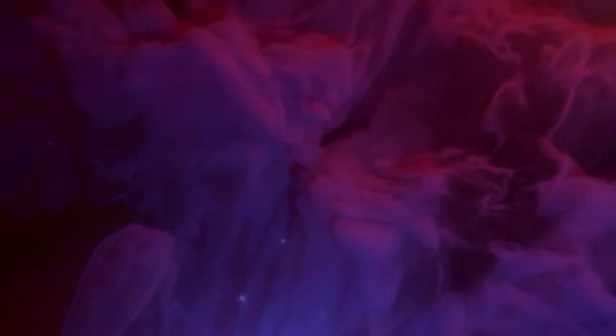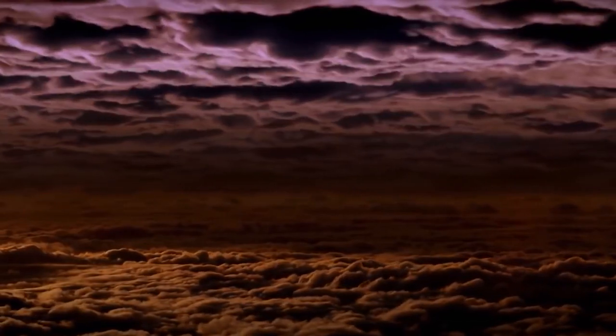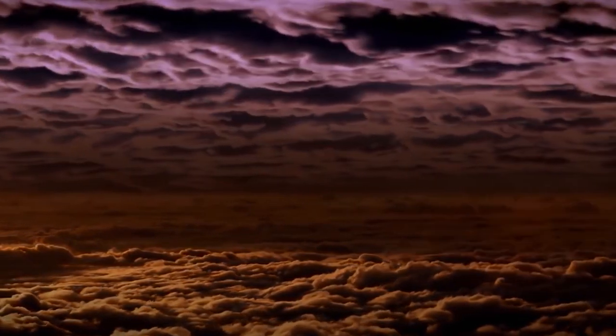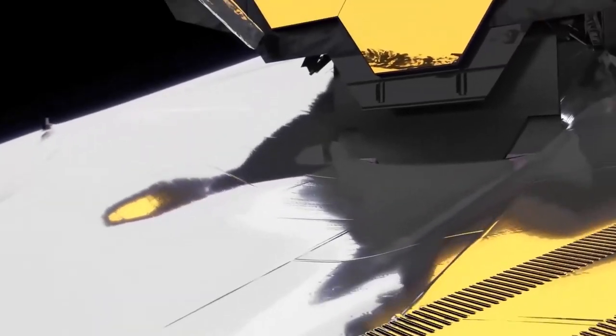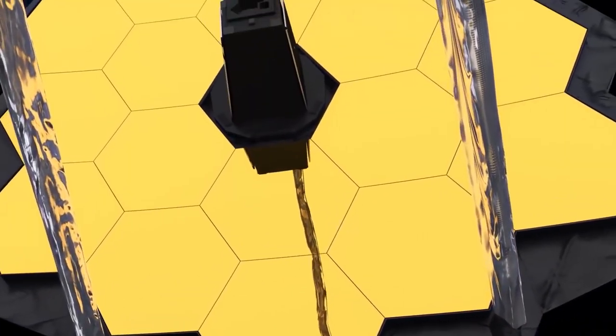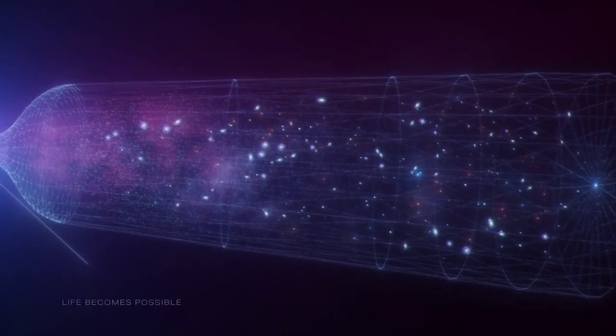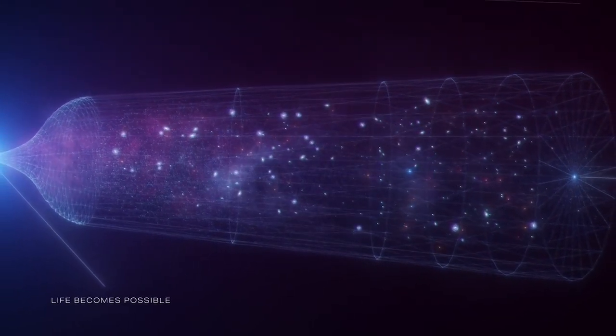The observation, which reveals the presence of specific gas molecules based on tiny decreases in the brightness of precise colors of light, is the most detailed to date, demonstrating Webb's unprecedented ability to analyze atmospheres hundreds and thousands of light-years away.